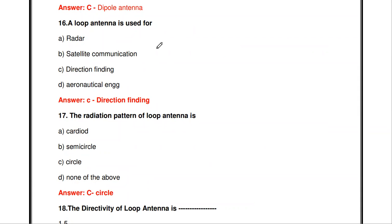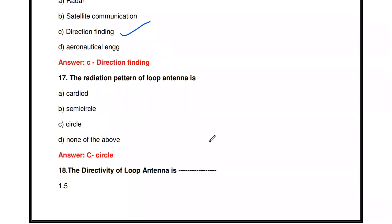A loop antenna is used for direction finding. This is the main application of the loop antenna and is a very important question to remember.